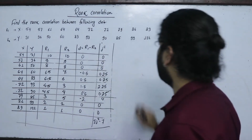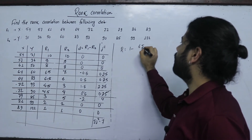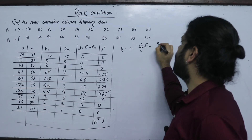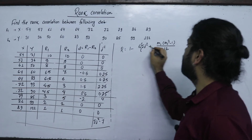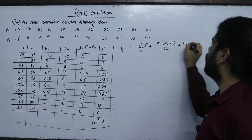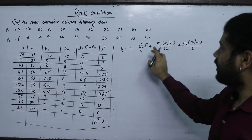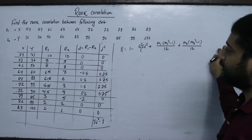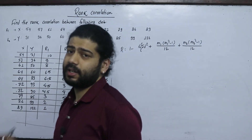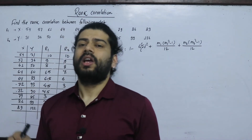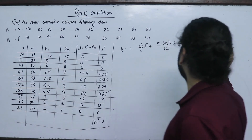The Spearman's rank correlation formula for repeated data is: R = 1 minus 6 times [summation of D² plus m1(m1²−1)/2 plus m2(m2²−1)/2] divided by n(n²−1). Here m1, m2, m3 are the number of times each value is repeated. For this data, 72 is repeated (m1) and 64 is repeated (m2).